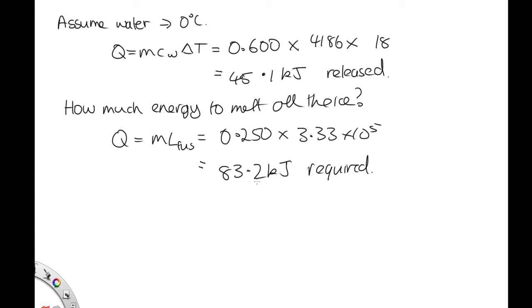We require more energy to melt the ice than we can get from cooling this water. So not all the ice melts. At the end, we have water and ice in thermal equilibrium. Our answer to part A is 0 degrees C.